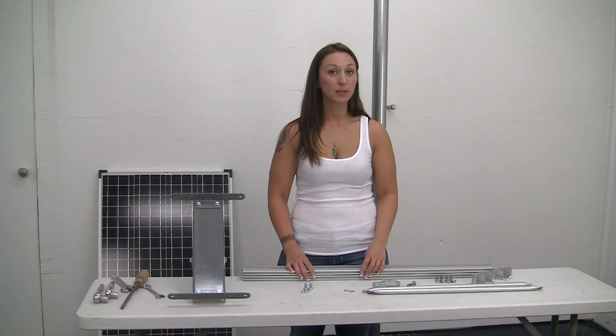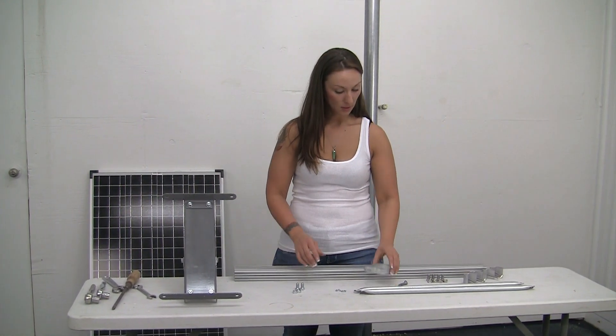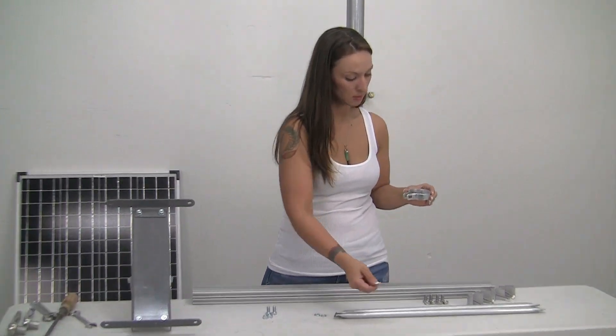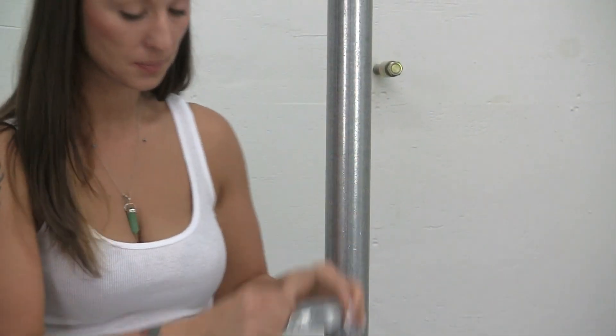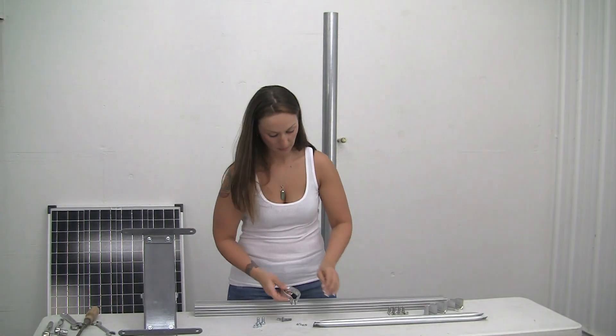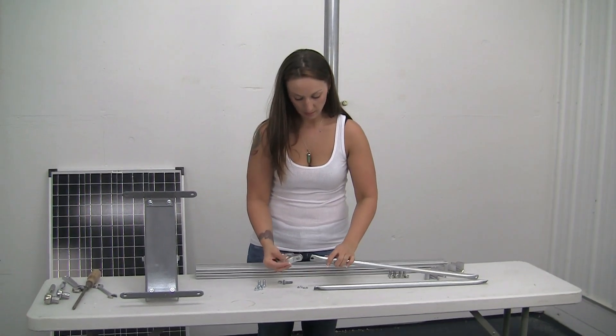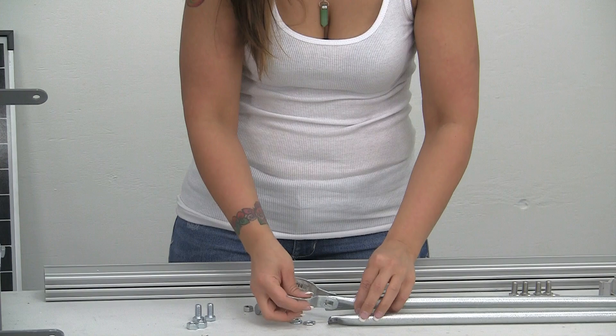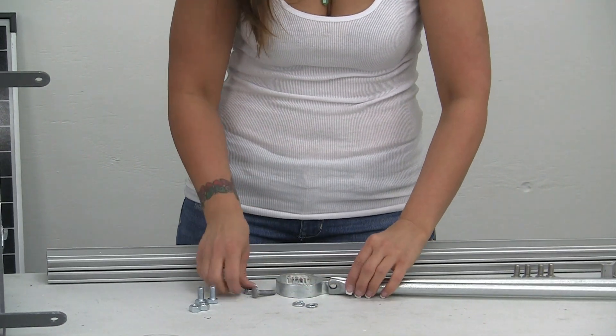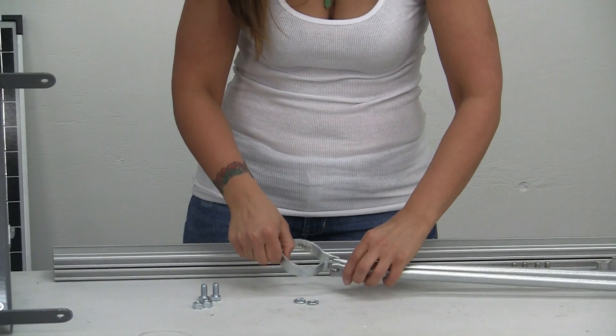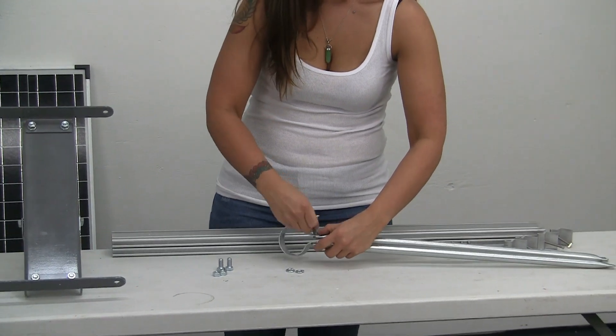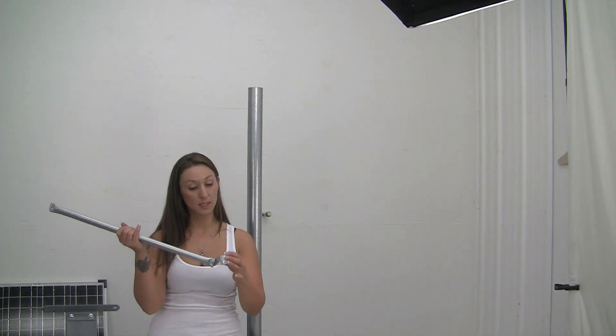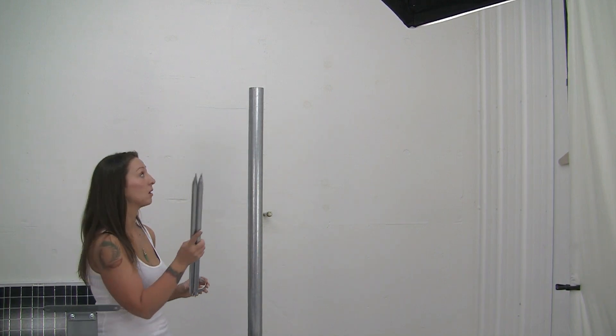Now we're going to go ahead and start mounting this on the pole, starting off with our little bracket here. We're going to take our arms and put them on and then slide it over the pole. Make sure when you're assembling, one goes in the middle and one goes on the outside. Now we're going to take the arms and the bracket and slide it up onto the pole.